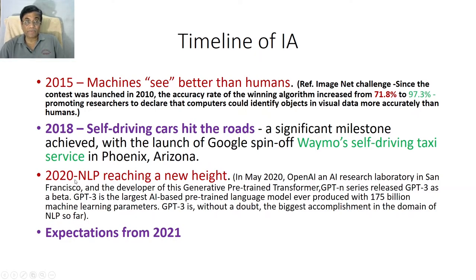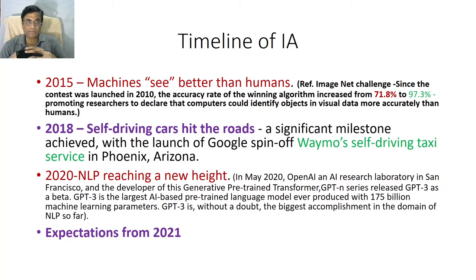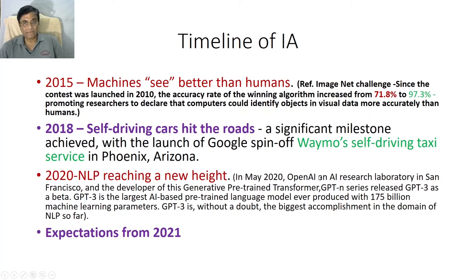Then 2020 was all about how computers should understand natural language. Natural language processing reached a new height. OpenAI — an AI research lab in San Francisco — developed the Generative Pre-trained Transformer. The abbreviation is GPT, in a series. The great challenge is how computers can learn natural language.